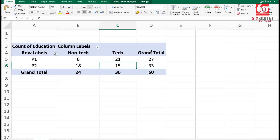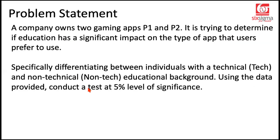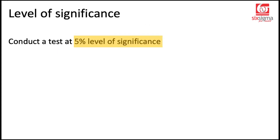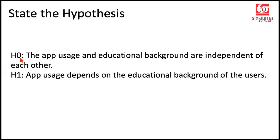The column totals and row totals are just the derived values. Now let's go back to the problem. It's stated that we solve this at a 5% level of significance. The null hypothesis is that app usage and educational background are independent of each other — it doesn't matter what the educational background is, users could use either app, P1 or P2. The alternate hypothesis says app usage depends on the educational background of users — people from a non-technical background may prefer one app over the other.